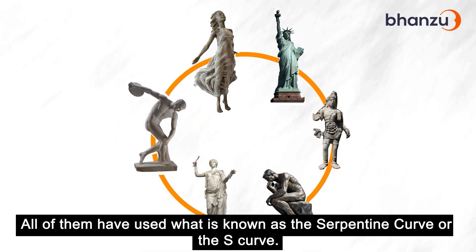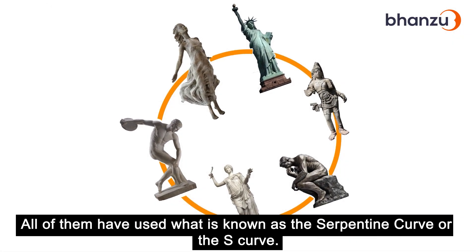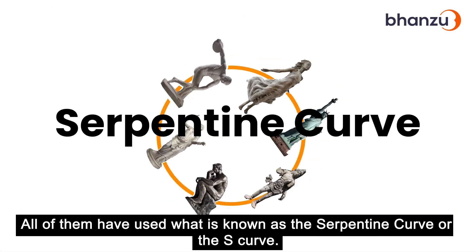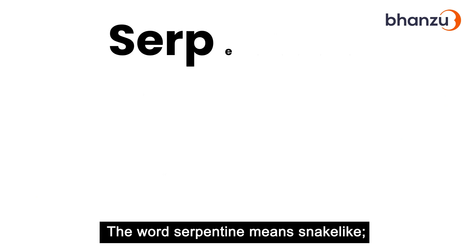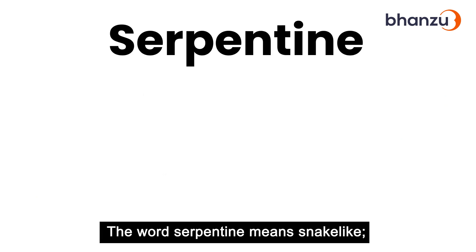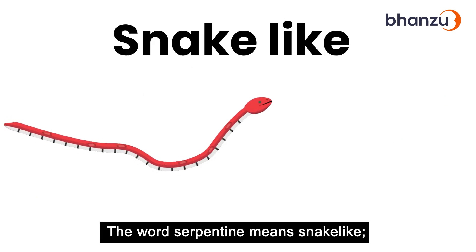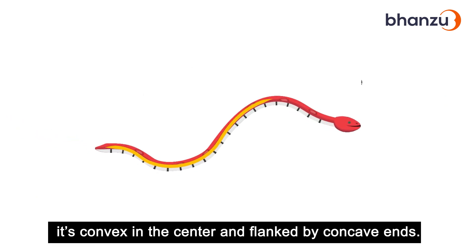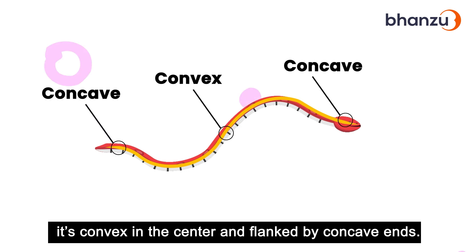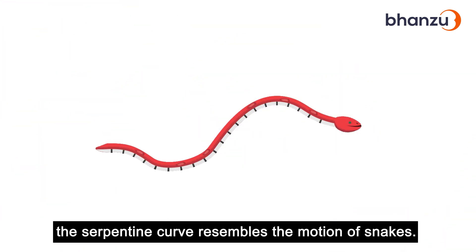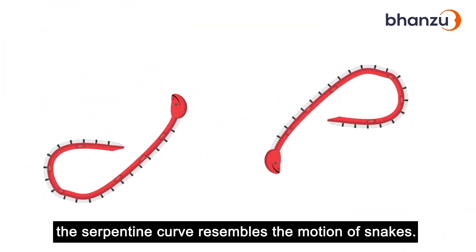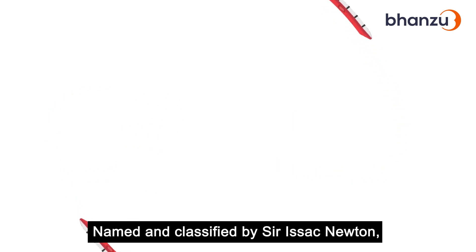All of them have used what is known as the serpentine curve, or the S curve. The word serpentine means snake-like. It's convex in the center and flanked by concave ends. Like the word implies, the serpentine curve resembles the motion of snakes.